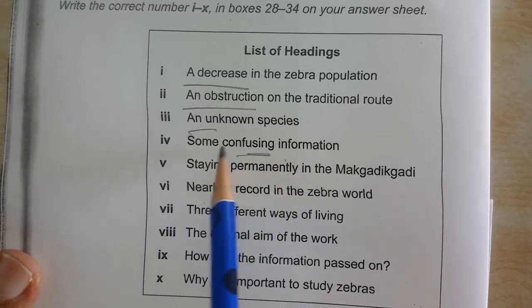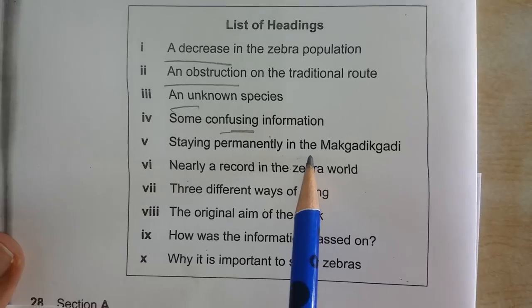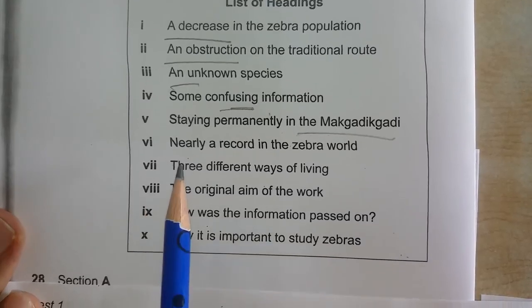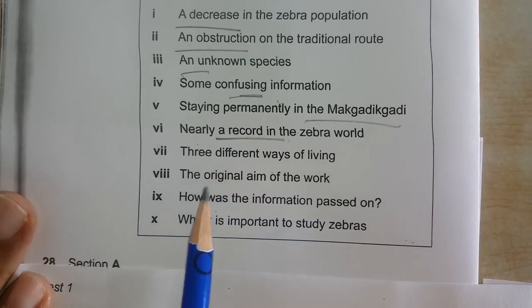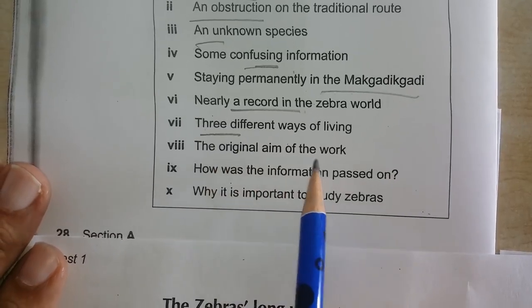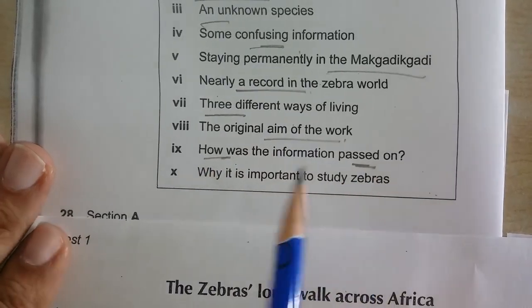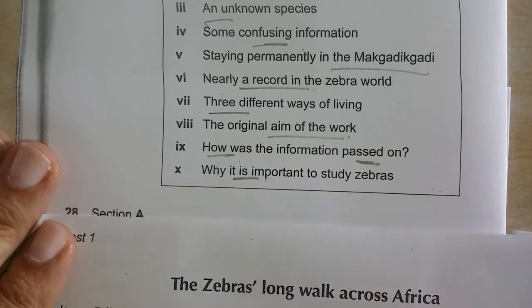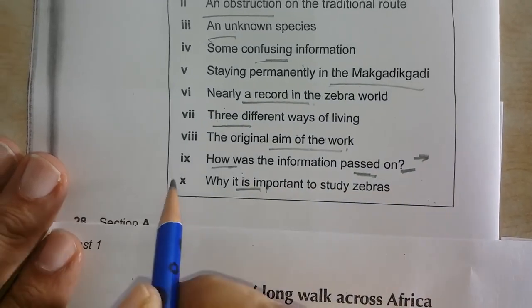I have underlined 'confused' and there is no 'A' or 'the' in 'staying permanently.' 'This area is described here.' Underline 'A' — 'this area nearly a record in the zebra world,' underline 'A record.' 'Three different ways of living' — three, counting mathematical term. 'The original aim of the work.' 'How was the information passed on,' 'how pass on information.' 'Why it is important to study zebras' — why it is important, with a question mark, so think on this one. Why needs a reason.